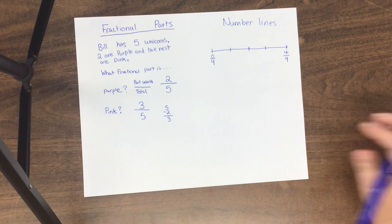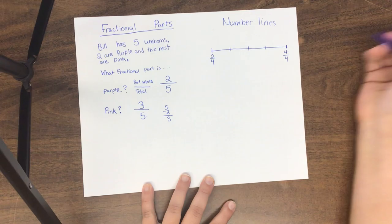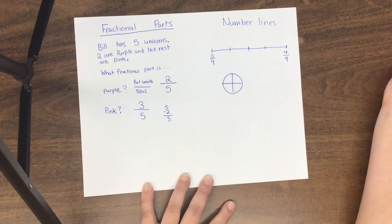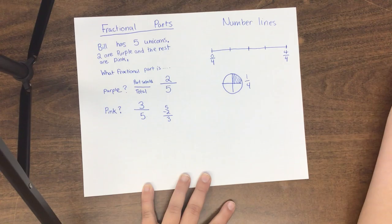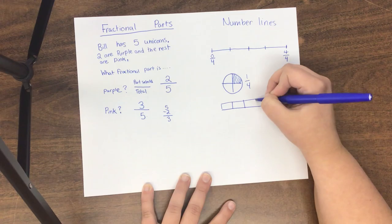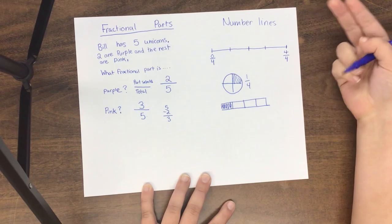Now, number lines. This is just some review work. We've talked about number lines before. There are many different ways to represent a fraction. For example, if I wanted to draw one-fourth, one way I could do that is by dividing a shape into four parts and coloring it in. That would be one-fourth. Another way I could represent one-fourth is with a nice bar like this. If I divide that bar into four pieces and color one in, that is also going to be one-fourth.